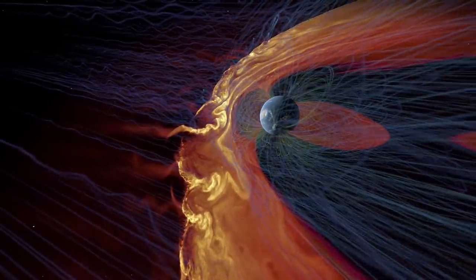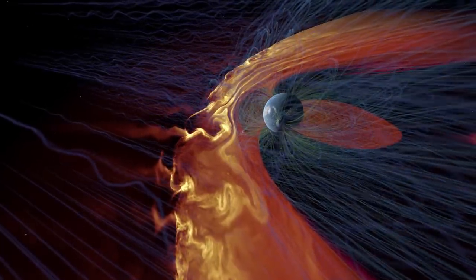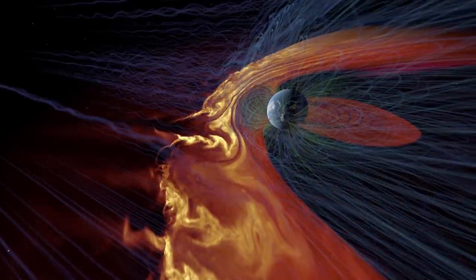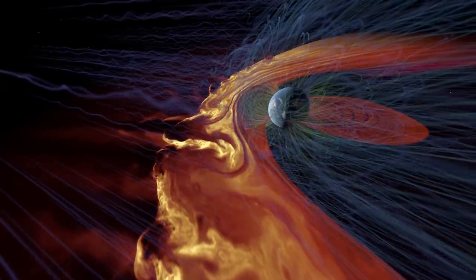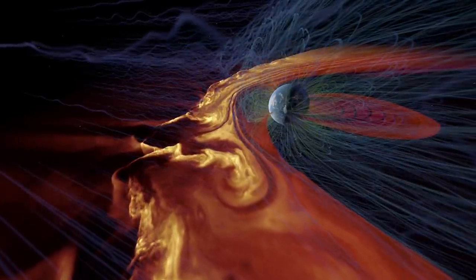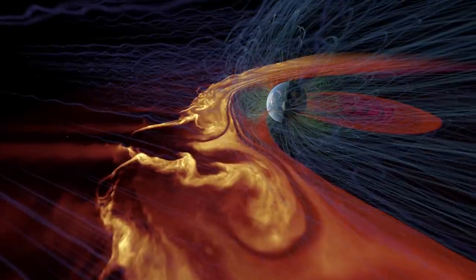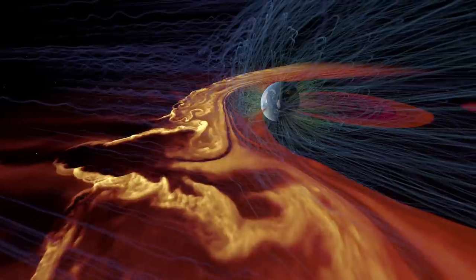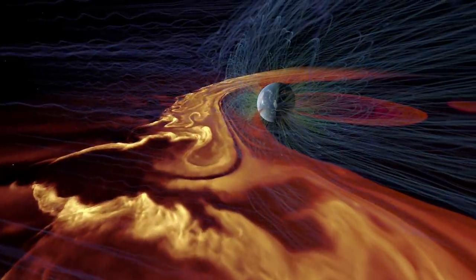Cracks begin to open up in Earth's protective armor. The fissures widen. Millions of tons of electrified gas now surge through in jet-like flows that can engulf the planet.